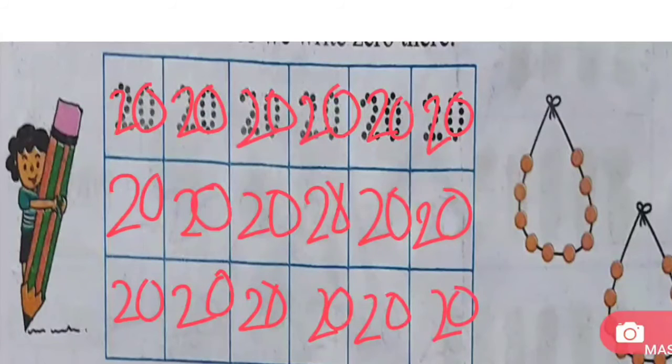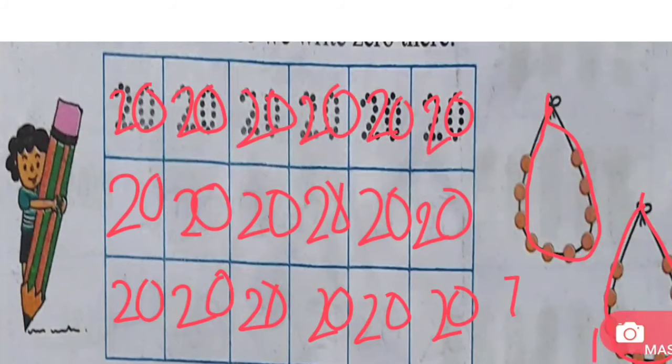Here, look at this necklace. How many units are there? 10 beads. And in this necklace, there are also 10 beads. So this is like 2 tens. This is 1 ten and this is 1 ten. That means 2 tens. That means 20.